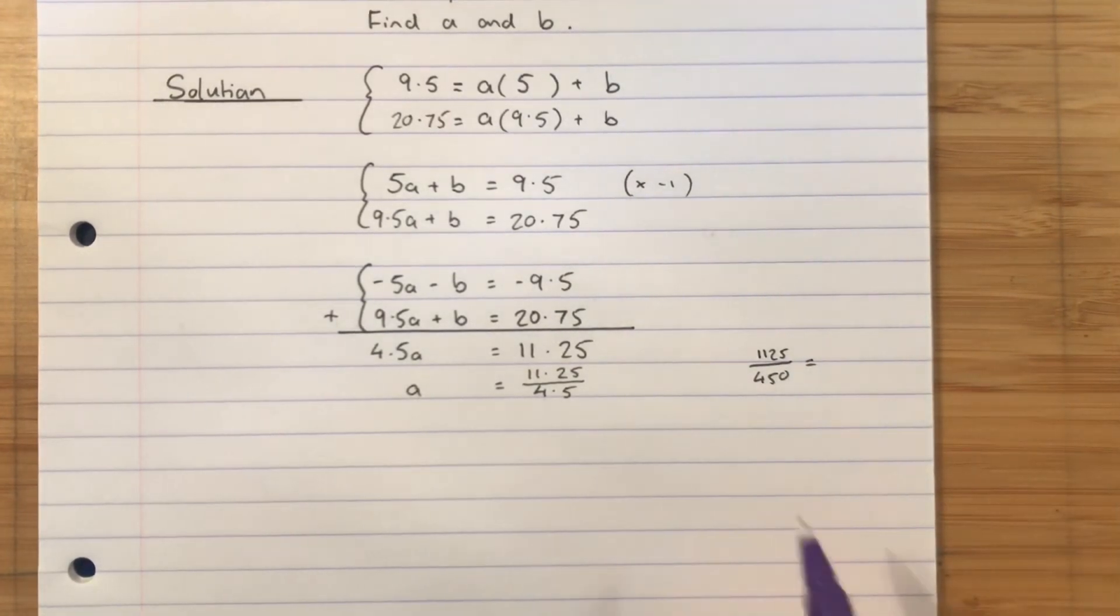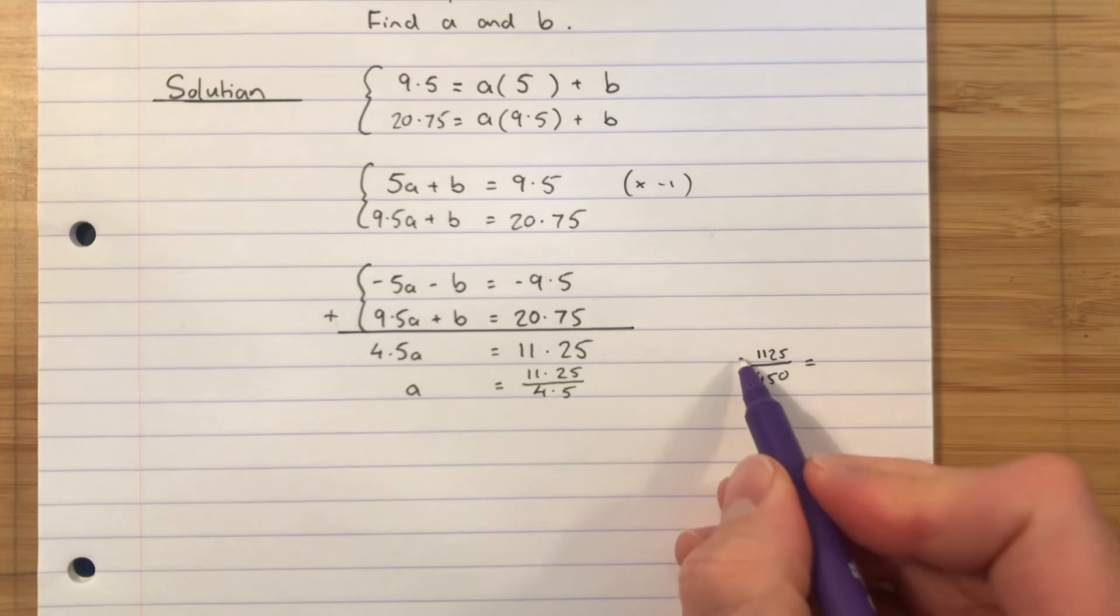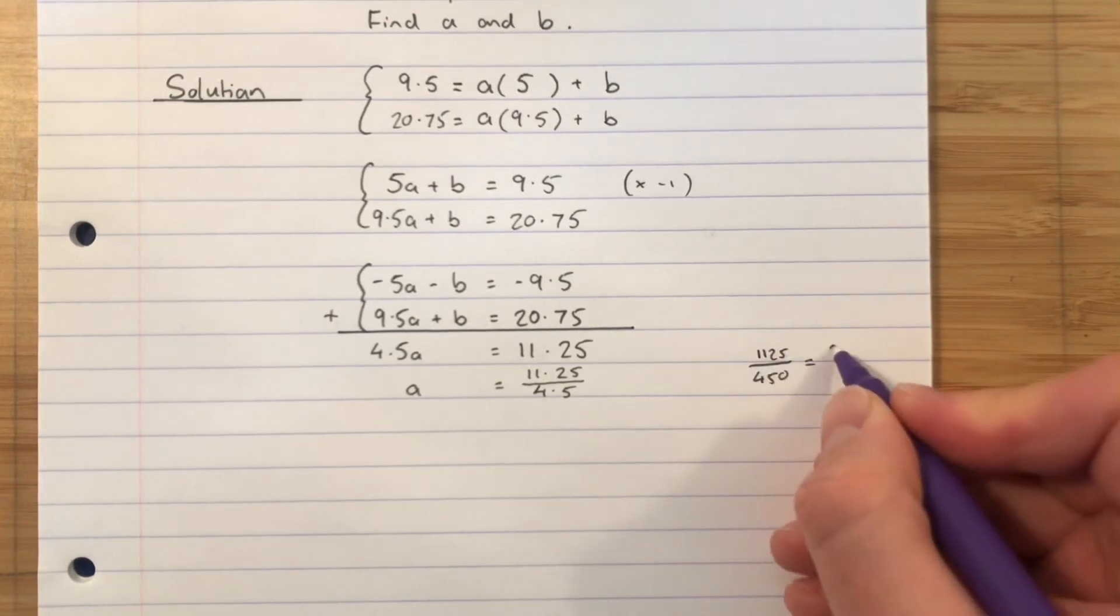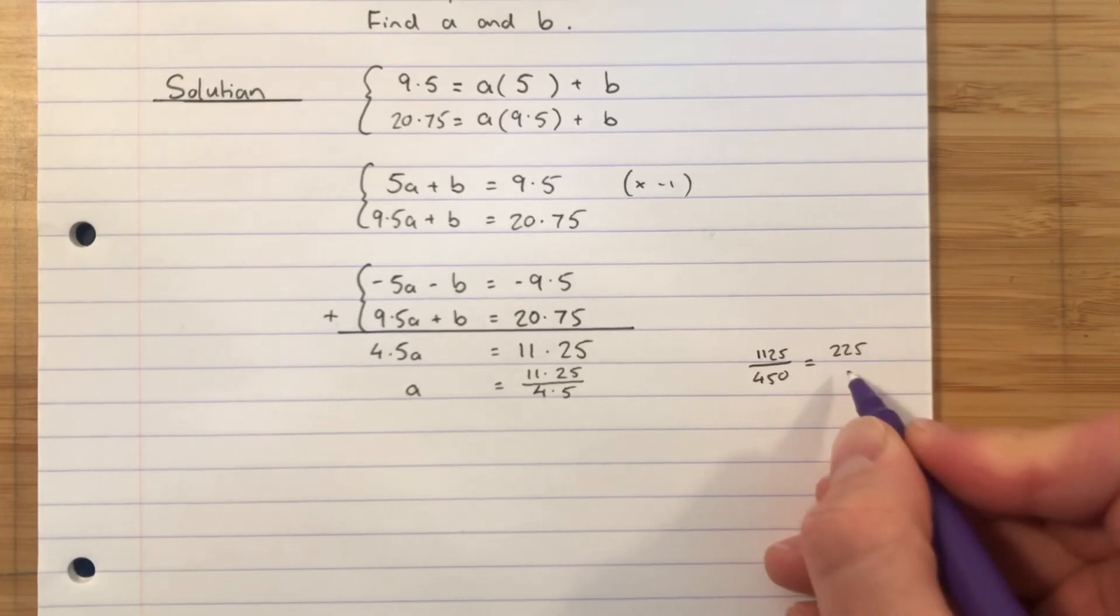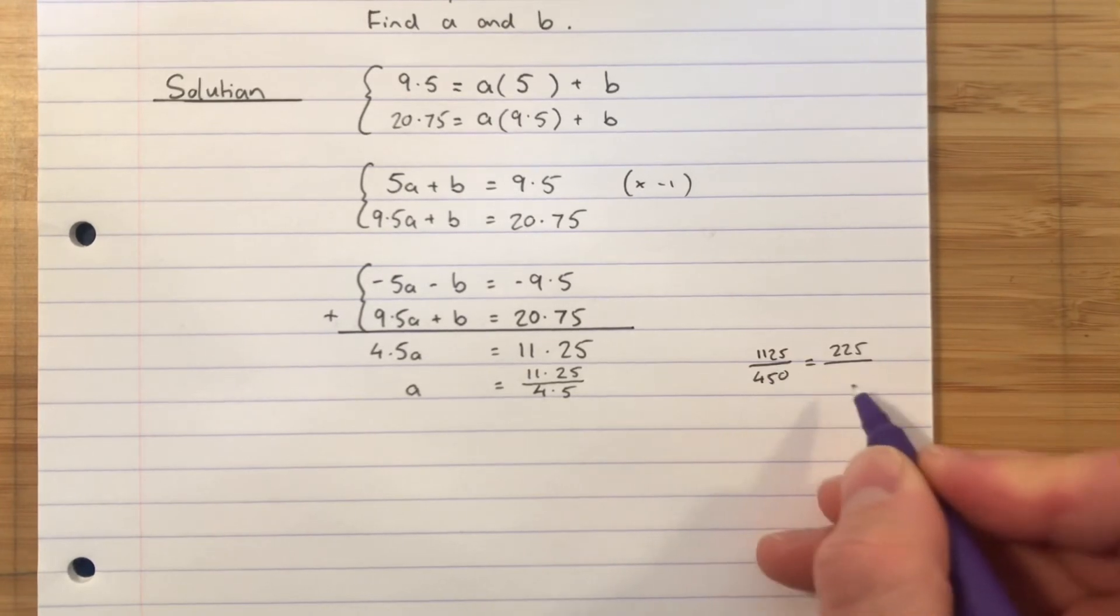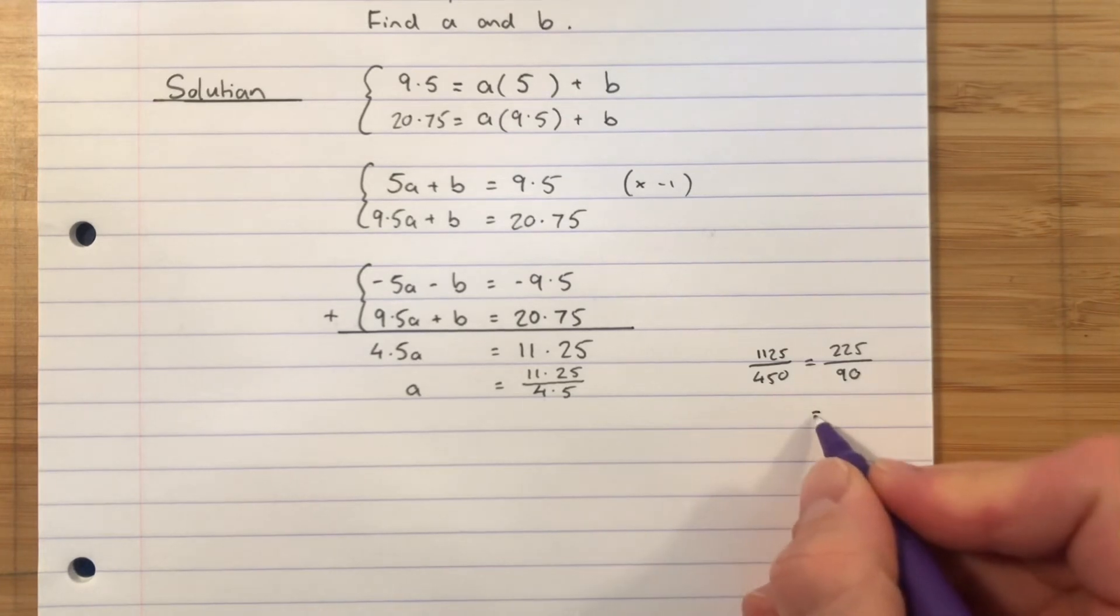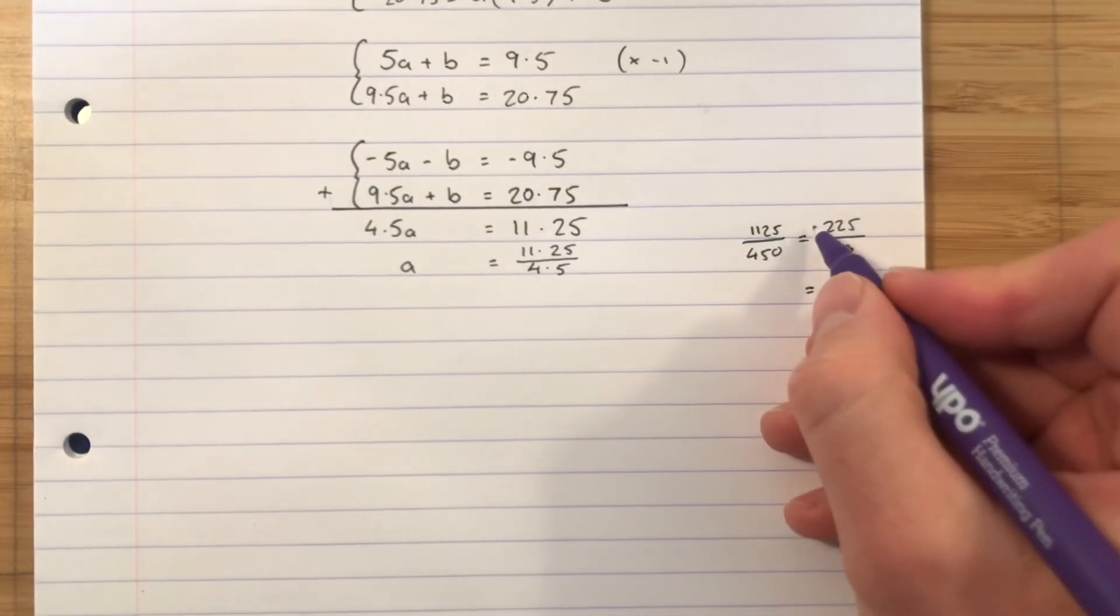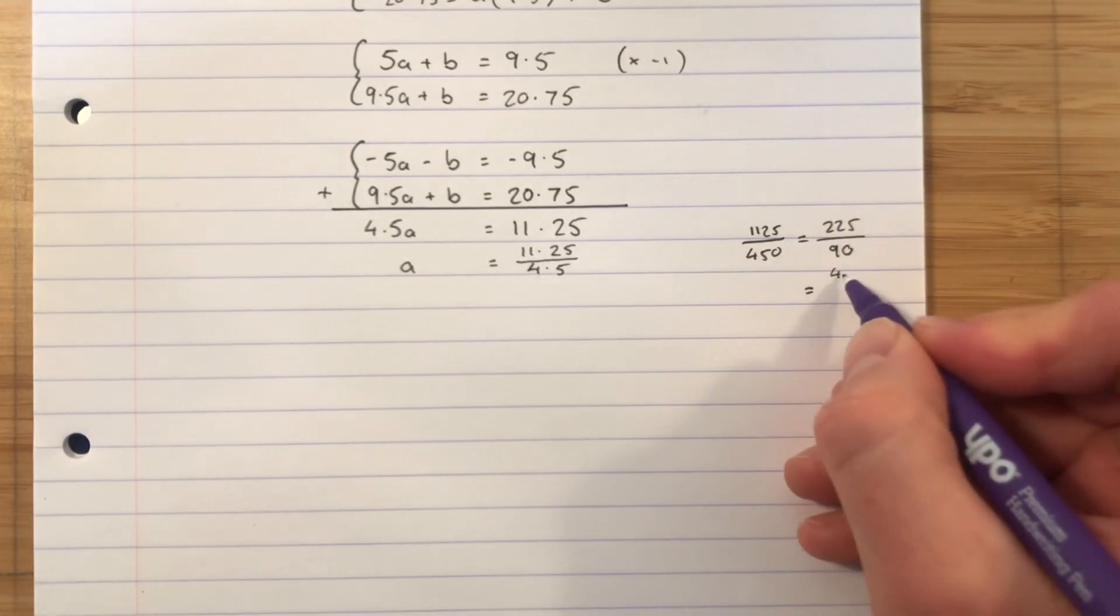I can see these both divided by 5. So 5 would go in there 9 times and then 0 times. So it's 225 over 90. They still both divide by 5. So 5 would go in there 45 times. And 5 would go in there 18 times.